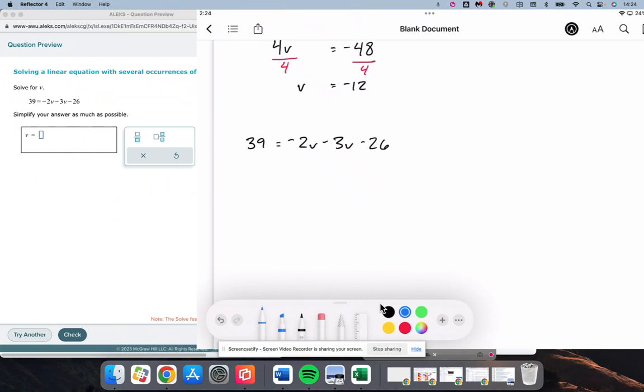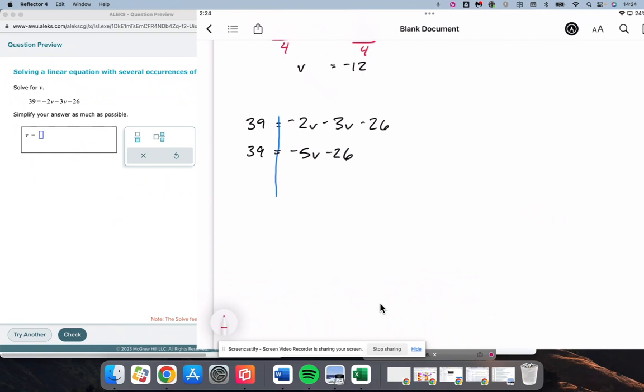And so we do see that on the right, we can combine the v's, which is going to give us negative 5v, because negative 2 and negative 3 make negative 5, minus 26. So we are subtracting 26 from 5v, which means we need to add 26 to both sides.